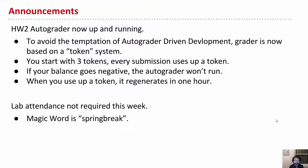You'll start with three tokens, and every time you submit you use up a token. If your balance ever goes negative, the autograder will not run. The tokens don't go away forever — whenever you use one up, it'll regenerate in one hour. Basically, it's just a velocity control mechanism so you aren't too tempted to lean on the autograder too much.